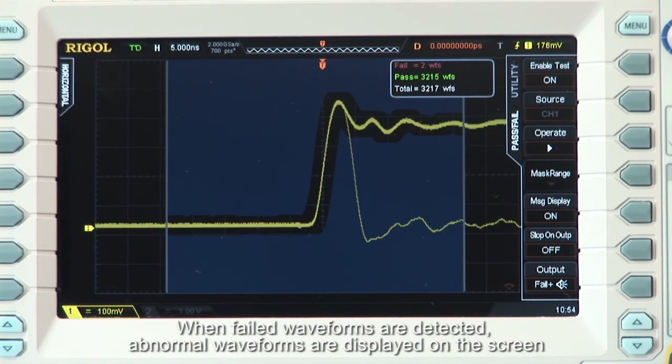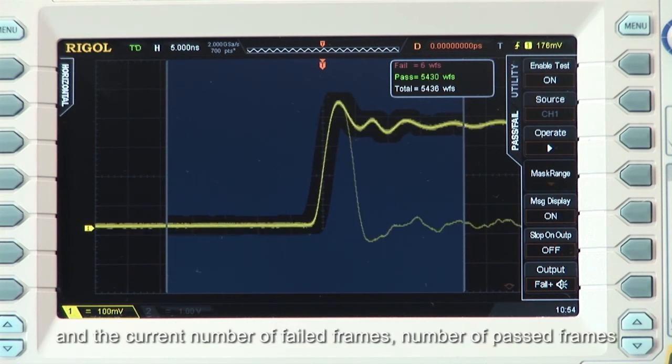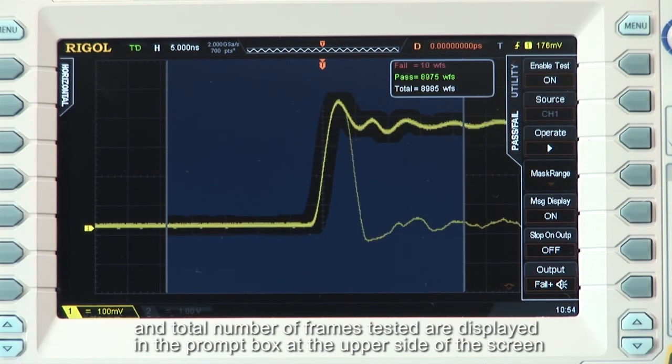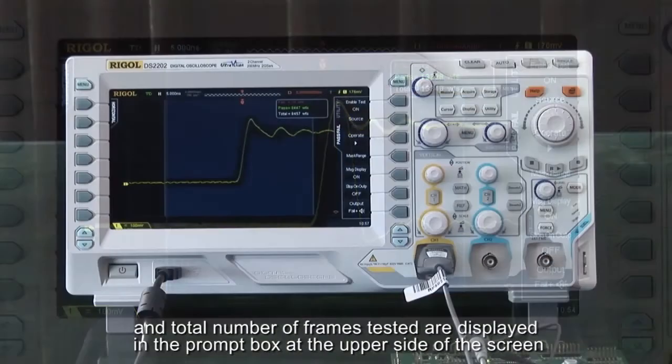When failed waveforms are detected, abnormal waveforms are displayed on the screen, and the current number of failed frames, number of passed frames, and total number of frames tested are displayed in the prompt box at the upper right side of the screen.